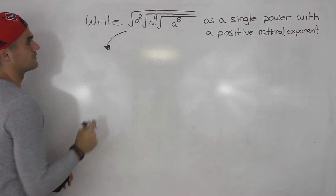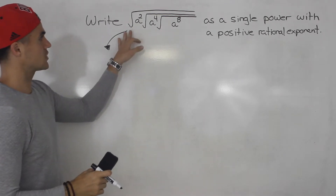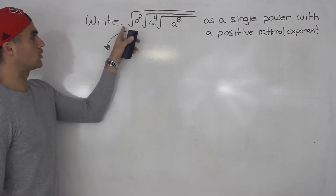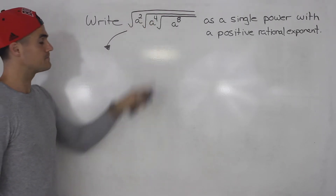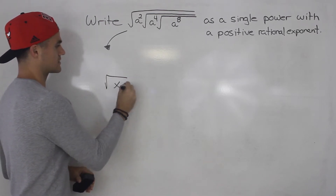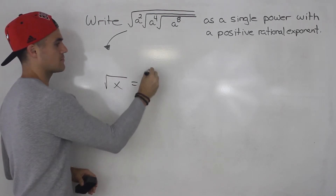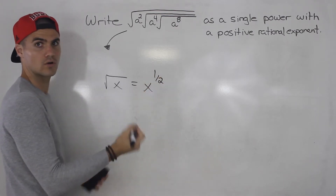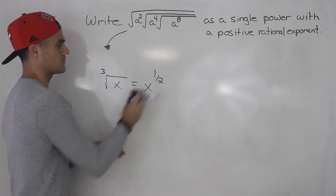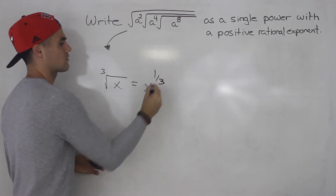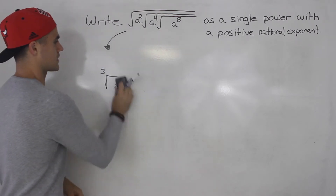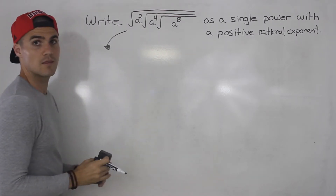What I'm going to do is first try to take all the square roots here and change them to a rational exponent. I'll start with the large square root on the outside. When you're square rooting something, the square root of x is the same as x to the power of 1 over 2. Or if we have the third root of something, it would be x to the power of 1 over 3. But here we're just dealing with square roots, so we know all of these are going to be to the power of a half.